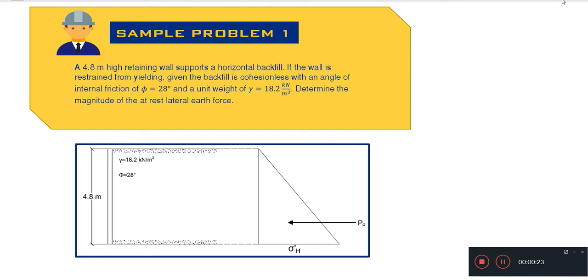given the backfill is cohesionless with an angle of internal friction of phi which is 28 degrees and a unit weight of gamma which is equal to 18.2 kN per cubic meter, determine the magnitude of the at rest lateral earth force.